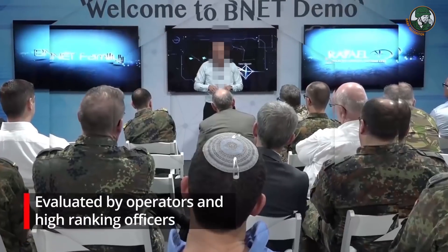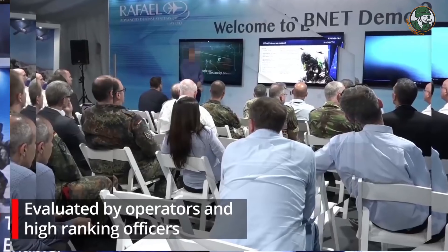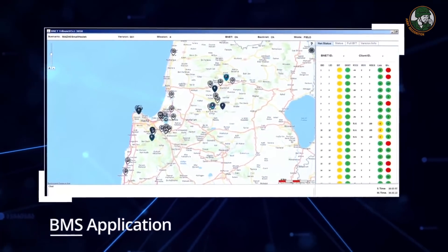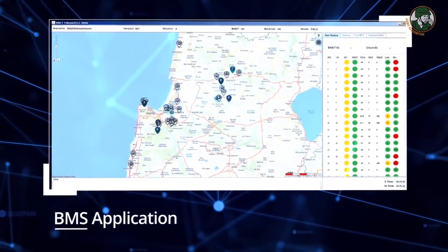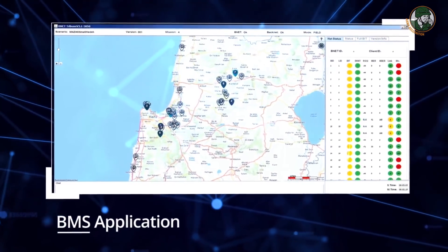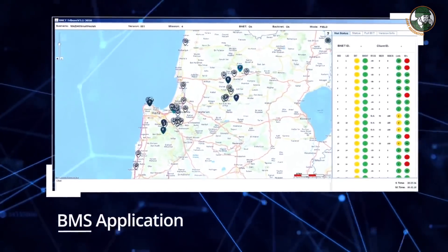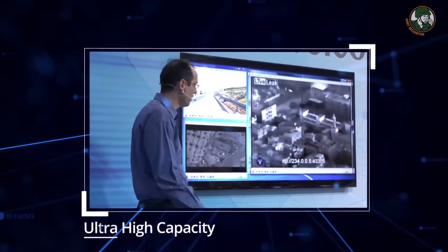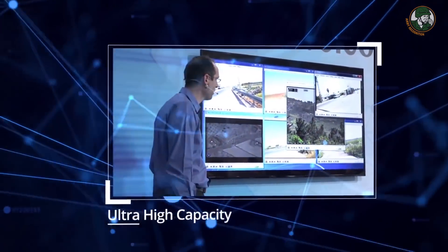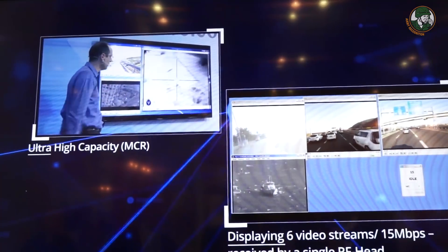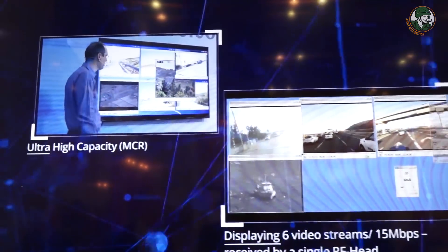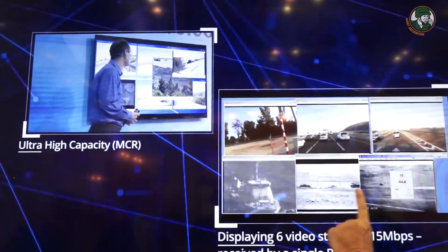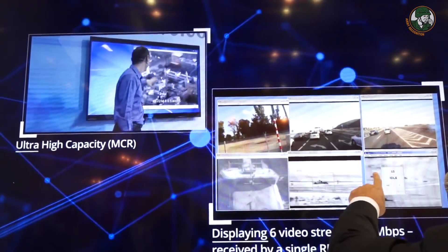This was the command post. These are the guests witnessing and being briefed about the area. The area is 30 by 60 kilometers. Here we see signs showing each node that is operating well, and there is also a connectivity table shown here. This is an example of carrying ultra-high capacity — receiving in one device at the command post six video streams simultaneously.